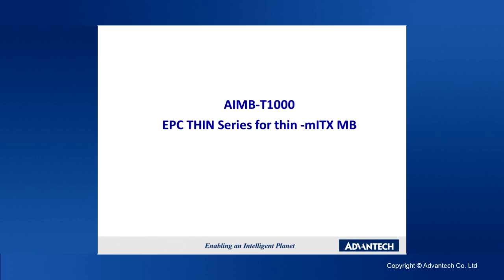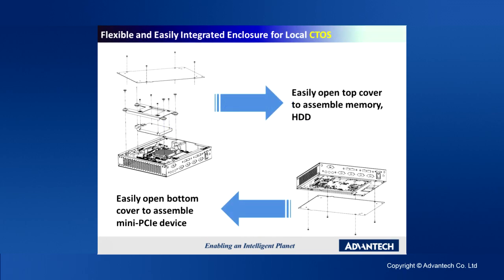Starting with AMB-T1000 for thin coastline boards. The design is quite straightforward — simple but efficient mechanical design. It's very easy to release the top cover to access memory and storage to build the system. If you release the bottom cover, you can access the Mini-PCI Express slot. You also have the option to access the fan holder, and the I/O bracket is interchangeable. So depending on which board you want to use, we will change the I/O bracket accordingly.